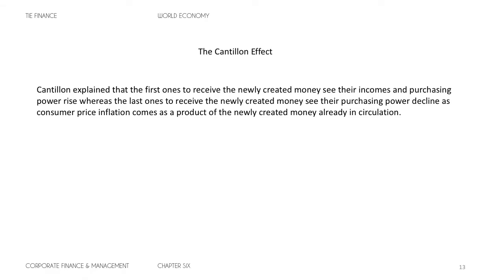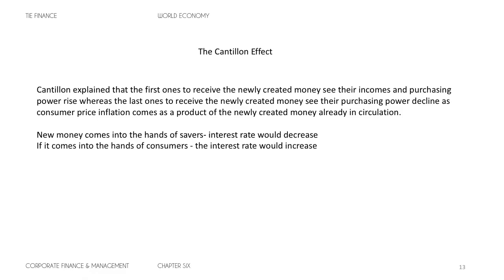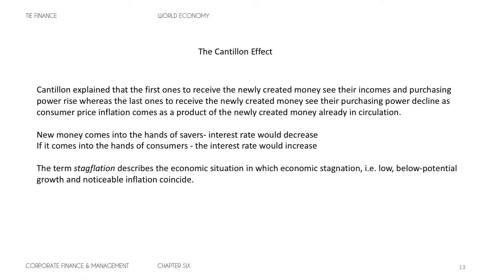The purchasing power and wealth is transferred from savers to the ones spending the newly created money. Cantillon famously noted that if the new money comes into the hands of savers, interest rates would decrease, but if it comes into the hands of consumers, interest rates would increase, as entrepreneurs and business people would need to borrow more to meet the increased demand for goods.